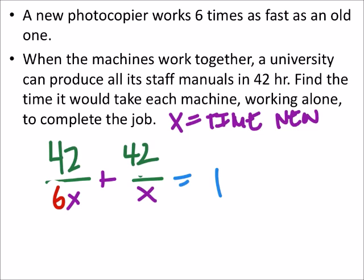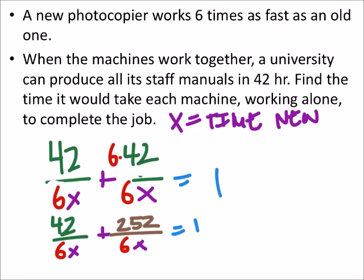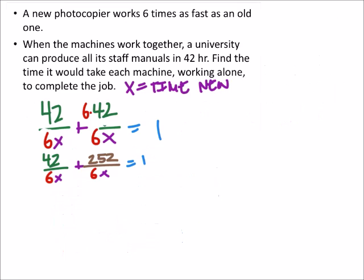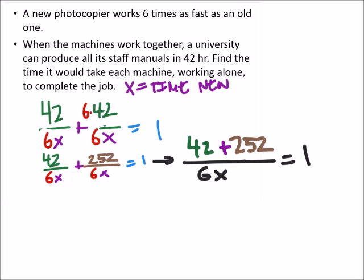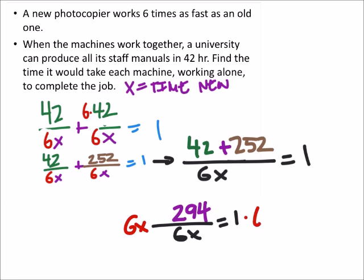We need common denominators to add those two fractions together, meaning I need a 6X denominator. I multiply 42 by 6 to get 252. Now I can write the left side as one fraction: 42 plus 252 over 6X, which gives me 294 over 6X. That should equal 1, so multiplying both sides by 6X gives 294 equals 6X.